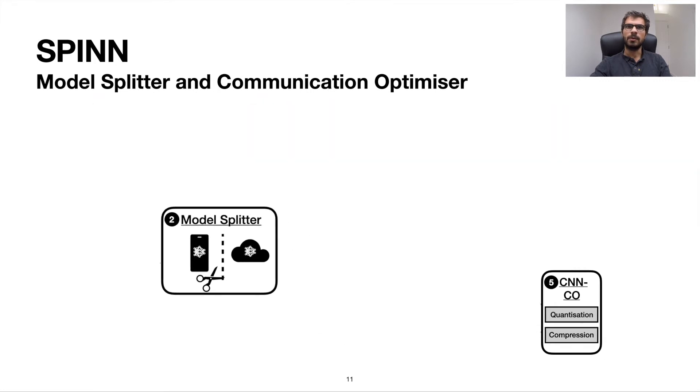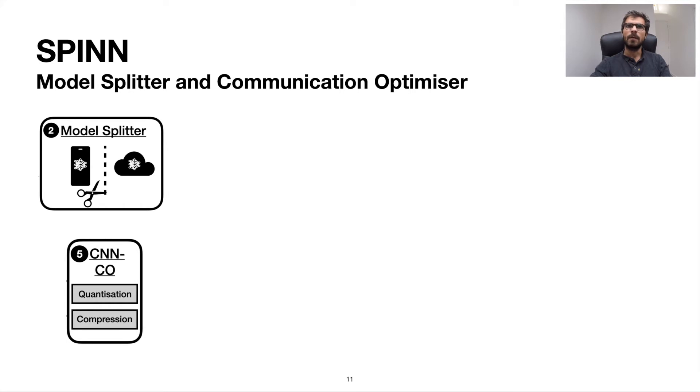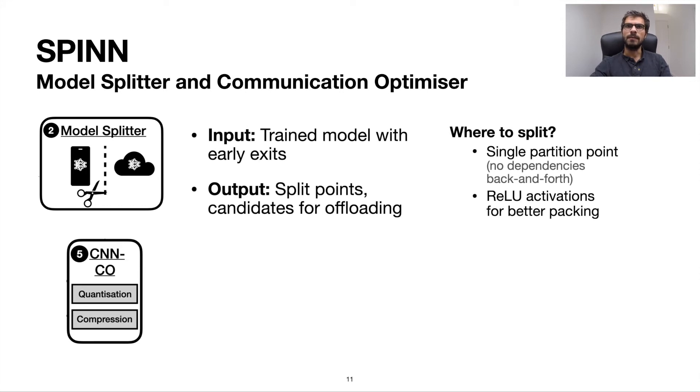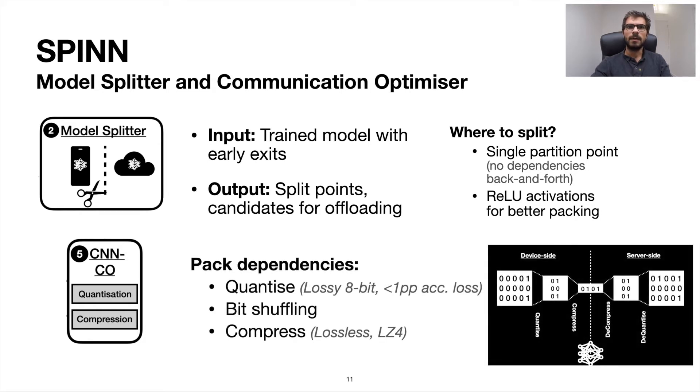Next, we describe the Model Splitter and Communication Optimizer, both of which aim for an optimized offloading channel between device and remote end. The Model Splitter takes the previously created early exit model and identifies potential split points along with its architecture. Our insights were that ReLU activations offer in fact great candidates for packing, as they're lower bounded by zero and allow for better compressibility. Moreover, we limit our search to a single partition point to avoid dependencies round trips. Essentially, the packing and transfers costs are overheads to the inference computation, paid to only be compensated by the faster runtime of the remote end. Once offloaded, it rarely makes sense to return the control back to the slower device and pay again the transmission cost. These partition points become relevant during offloading.